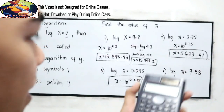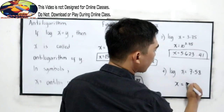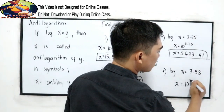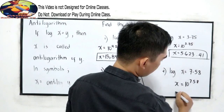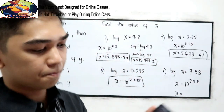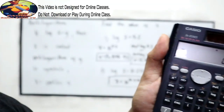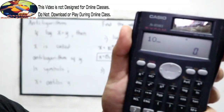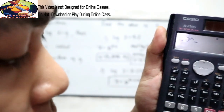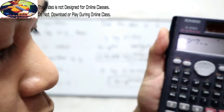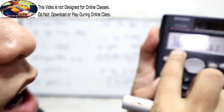Number 5: x is equal to 10 raised to 7.58.